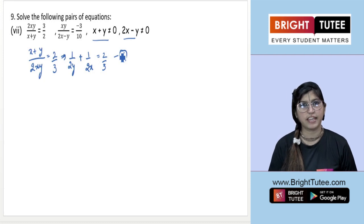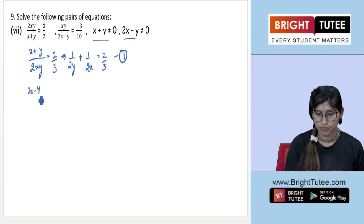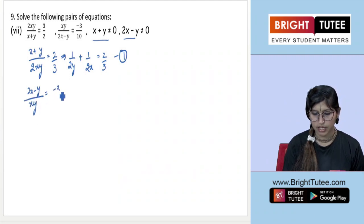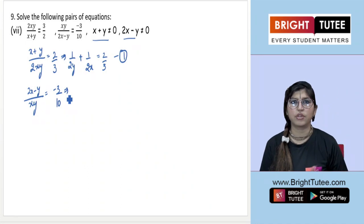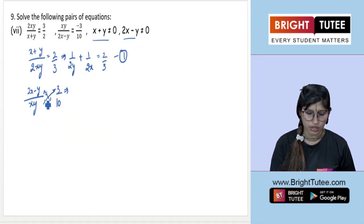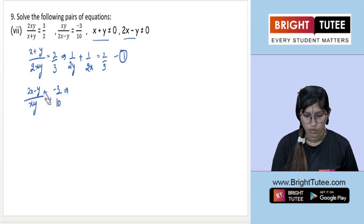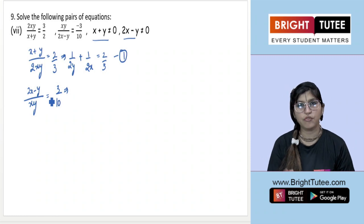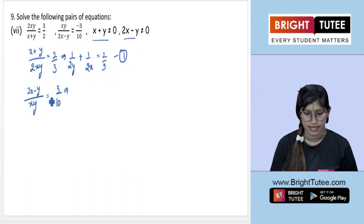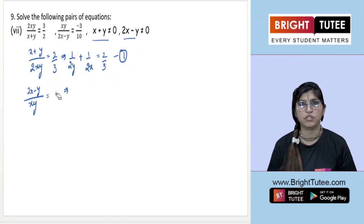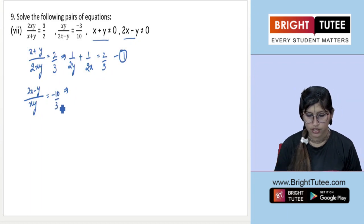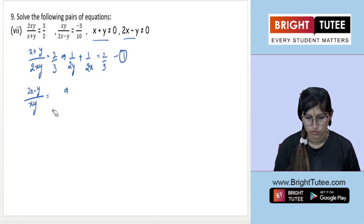Moving to the second equation and doing the same thing: we take the reciprocal of xy upon (2x − y) equals −3/10. Taking the reciprocal gives (2x − y) upon xy equals −10/3.